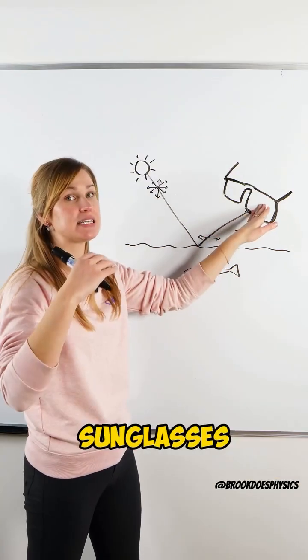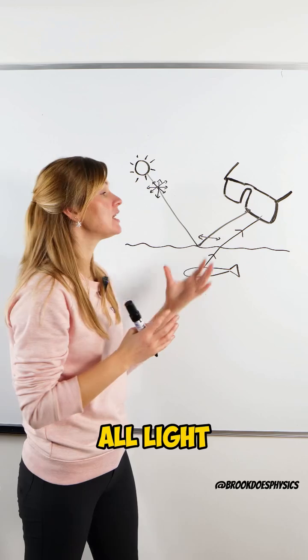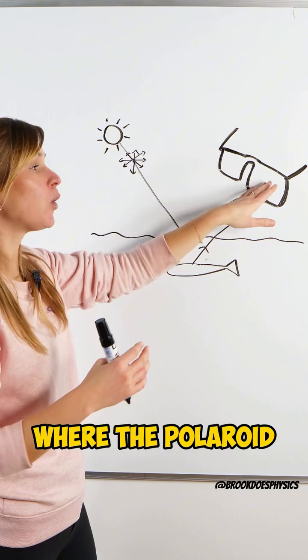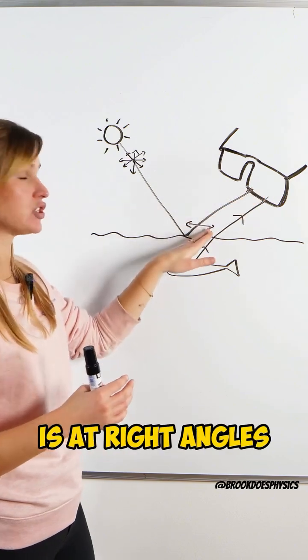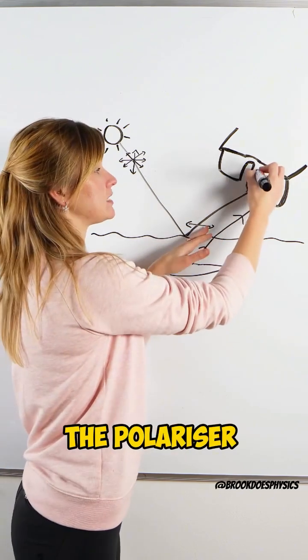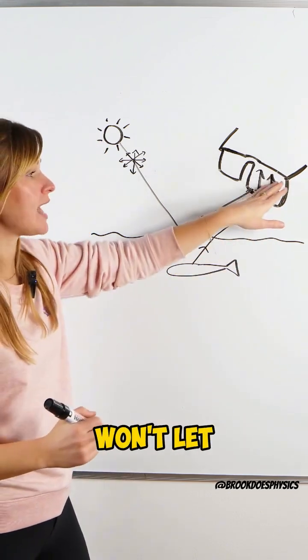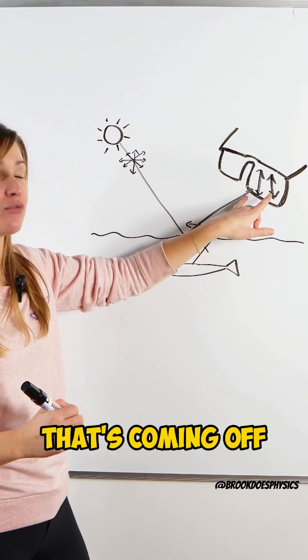If you wear normal sunglasses, it would just reduce the intensity of all light. But if we wear polarized sunglasses where the polarizer is at right angles to this, say in a vertical plane, it won't let through or will reduce this light that's coming off reflected from the water.